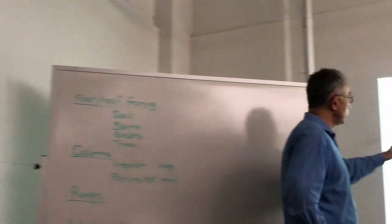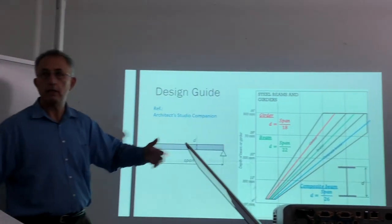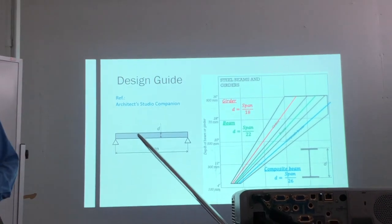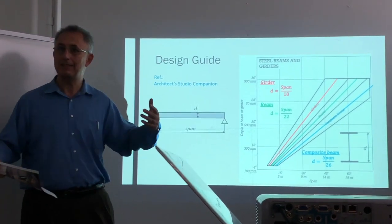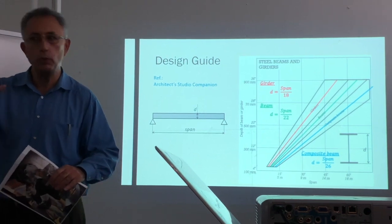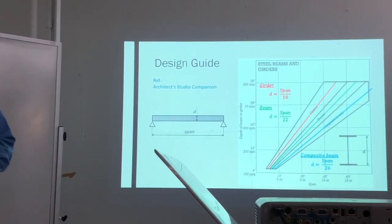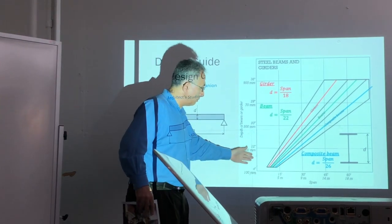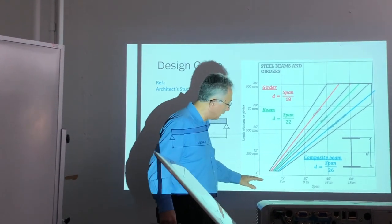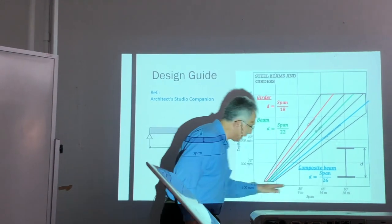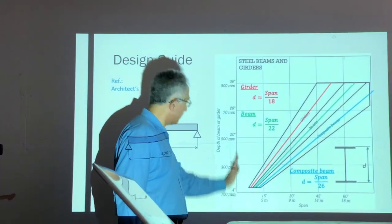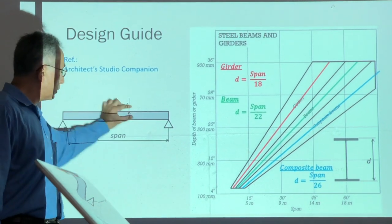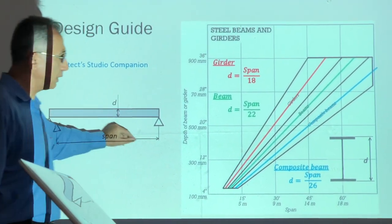If you go to the Architect's Studio Companion, it's a good guide to have on your desk while doing design. It contains design charts and rules of thumb to approximately size your members. These charts are organized as a relationship between the span — the distance between supports — and the depth of the member. The span is the distance between supports and the depth is the total depth of the member.